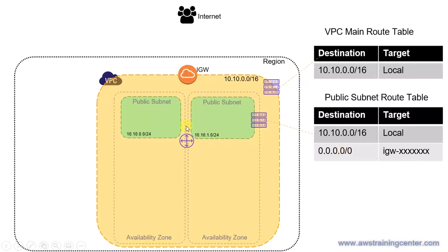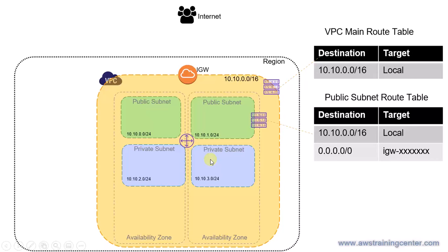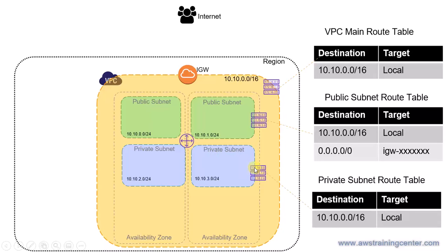Typically, web servers or a bastion host reside inside the public subnet. Databases or application servers behind the web server need not be exposed publicly — nobody should be able to reach them directly from the outside, and they don't need public IP addresses. That's what we call a private subnet. In a private subnet, there is no route to the internet directly. Its route table has only the local entry. You should always create a dedicated route table for each subnet so you can control how traffic flows in and out. Similarly, database subnets would also be private subnets.